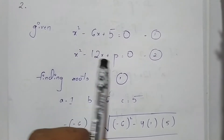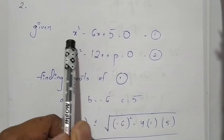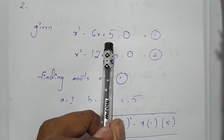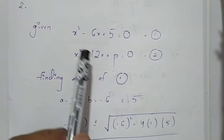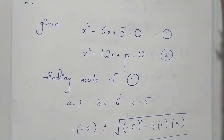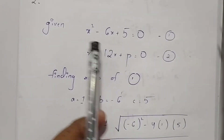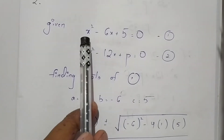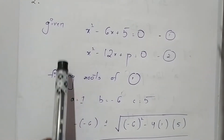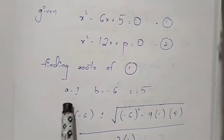The question says that these two equations have a common root and we need to find the value of b. First, let us find the roots of the first equation, because these equations will give two roots, and from those two roots one root will be common. So first we find the roots of this equation.